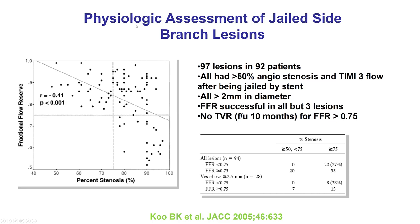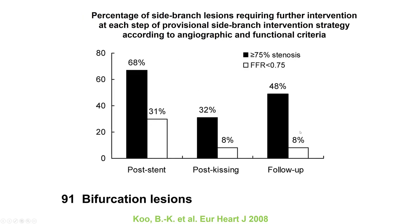Coronary physiology can be very useful for assessing the severity of stenosis of jailed side branches. It turns out that although angiographically many of them appear to be significant, when FFR is measured, only about a third or fewer are actually significant.